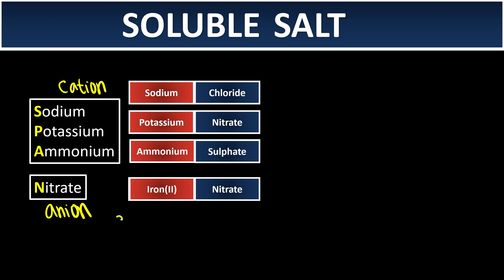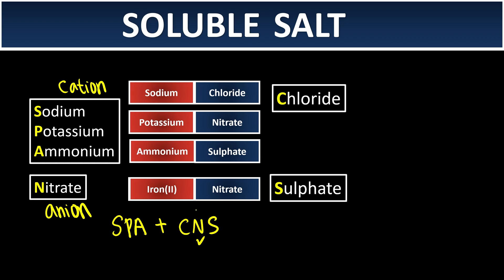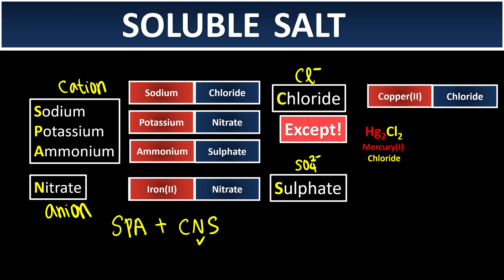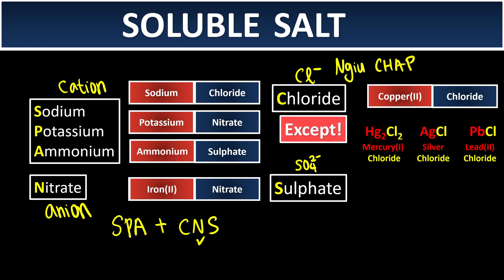A helpful mnemonic: go to the spa and enjoy your chicken nugget sandwich. The nugget is perfect — meaning chloride and sulfate are also soluble as anions. But there are exceptions for chloride. All chloride salts are soluble, except mercury(I) chloride, silver chloride, and lead(II) chloride. To remember these exceptions: Hg, Ag, and Pb — or 'children have another party.'